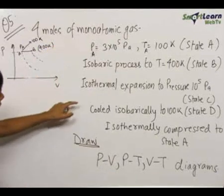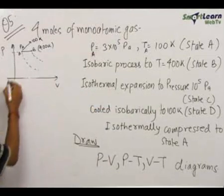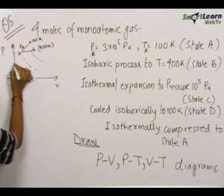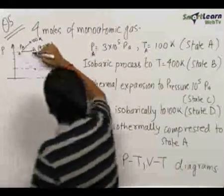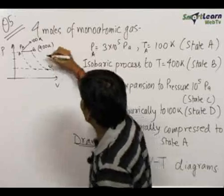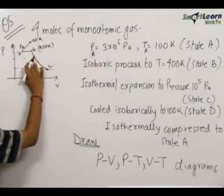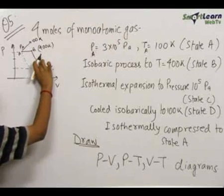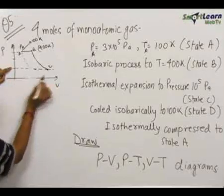Now from B it undergoes isothermal expansion to a pressure of 10⁵ Pascals. The initial pressure was 3×10⁵ Pascals, and now we come down to 10⁵ Pascals. Since it is an isothermal process, it should lie along an isotherm. The pressure comes down and the volume increases, so we follow the isotherm curve to a higher volume — this gives state C.